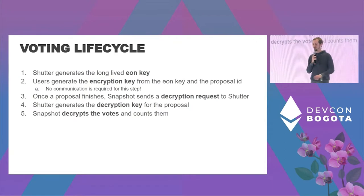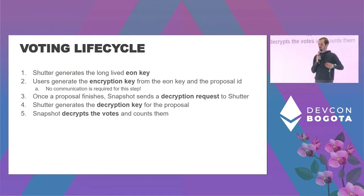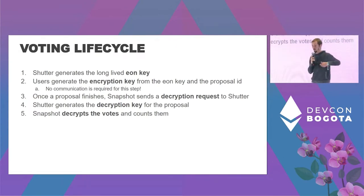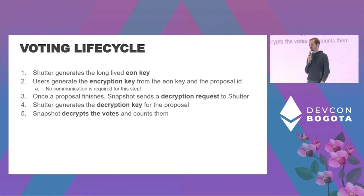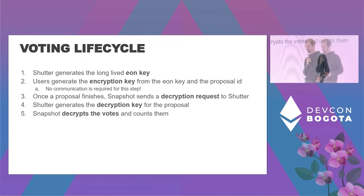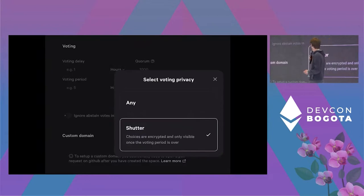Here's how it works — the lifecycle of a vote. The Shutter system starts by generating a long-lived signing key, done once. When a user wants to vote on a proposal, they use that signing key and the proposal ID to derive an encryption key from these two pieces of data. No communication is required — it can be done purely locally. Once a proposal is finished, the user encrypts their vote and sends it to Snapshot. Snapshot then sends a decryption request to the Shutter system, which generates the decryption key because it's now safe to reveal the votes since no one can vote anymore. Using that decryption key, Snapshot can decrypt and count everything.